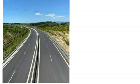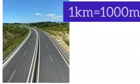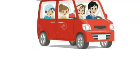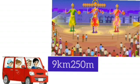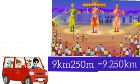Students, long distances are expressed in kilometers. 1 kilometer is equal to 1000 meters. Today, Raju went to Dussehra ground with his parents. The distance of Raju's home from Dussehra ground is 9 kilometers 250 meters. Students, if this distance is expressed in kilometers, then we will write it as 9.250 kilometers. Kilometers on the left side of the decimal and meters on the right-hand side of the decimal.